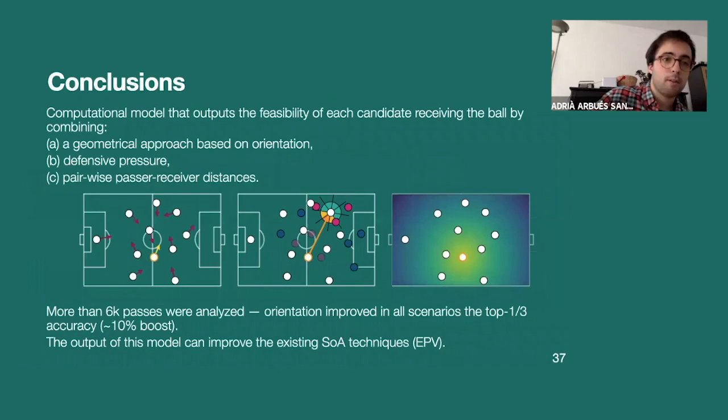In order to conclude and wrap up a little bit, we build a computational model that outputs one feasibility measure for each potential receiving candidate based on orientation, defensive pressure, and pairwise distances between the passer and the receiver. We analyzed more than 6,000 passing events, and we saw that orientation made them improve in all scenarios in terms of top one and top three accuracy with up to 10% boost. Finally, the output of this model, we proved that we can combine it with some existing state-of-the-art techniques such as expected possession value.